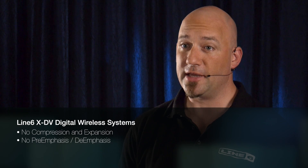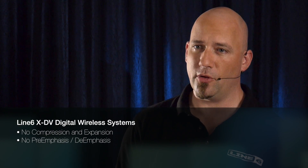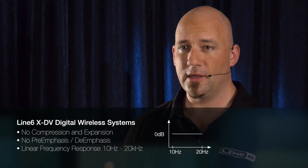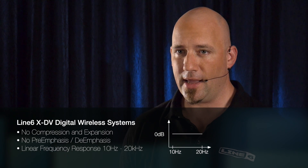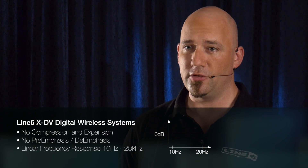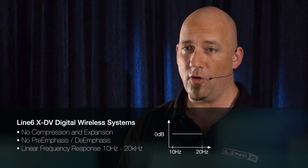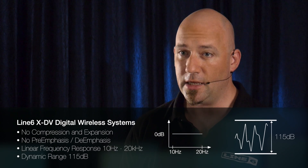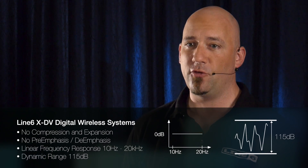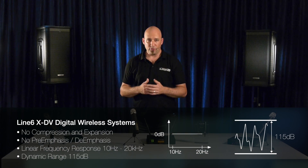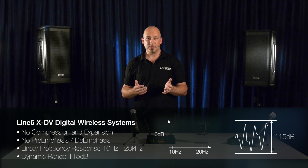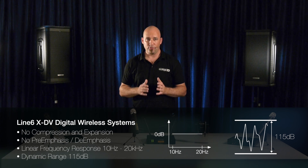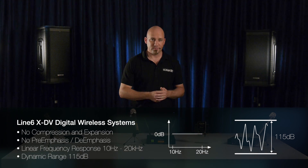The XDV system has a frequency response of 10 Hz to 20 kHz and can accommodate a wider input dynamic range of over 115 dB, eliminating the need for level controls. The result is that the input signal is accurately reproduced at the receiving end.